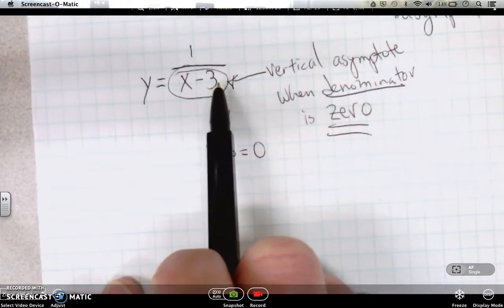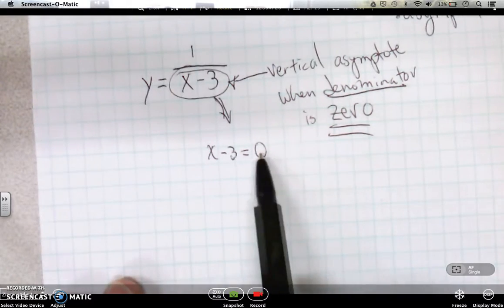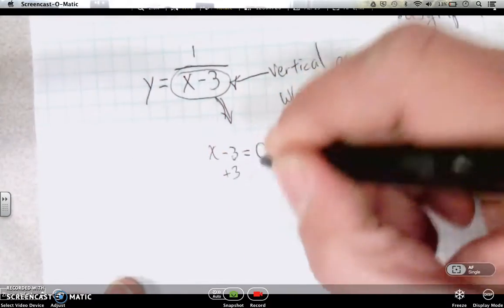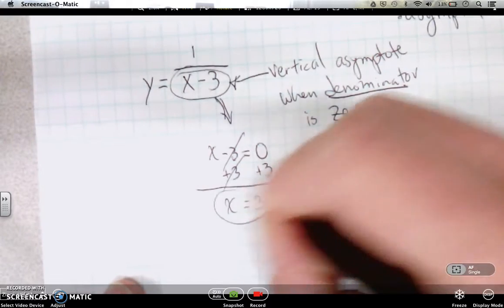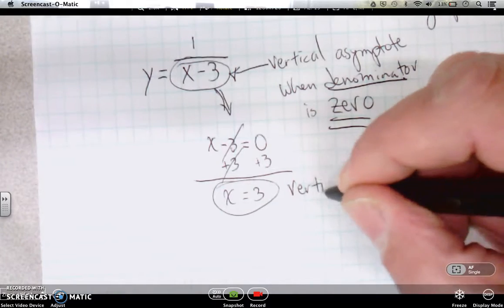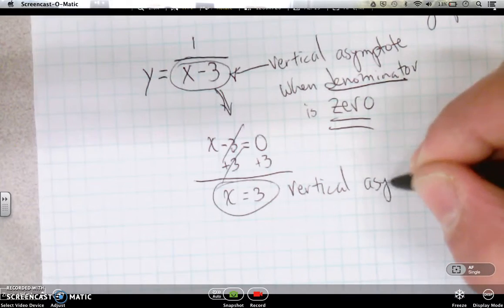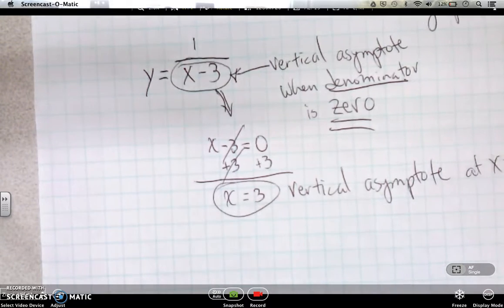So whether it was like 2x minus 19, 1 half x plus 34, doesn't matter. Set it equal to 0. Solve it using algebra as we're doing here. Vertical asymptote will be now at x equals 3.